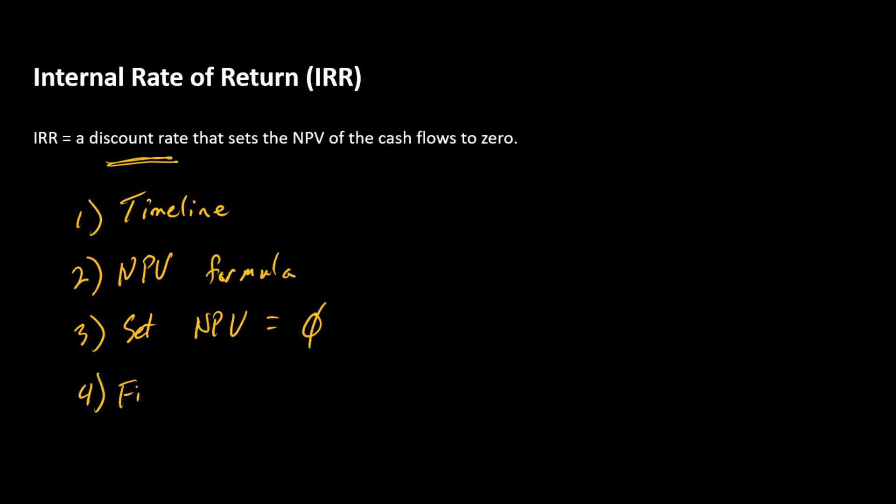And then finally, we just want to find whatever value of R establishes that equality—the R that sets NPV equal to zero. Now, if we have a very simple formula that has what we call a closed form solution, a formula that we can algebraically manipulate to get to some R equals something, then we can go right ahead and plug in some numbers and find IRR and be done.